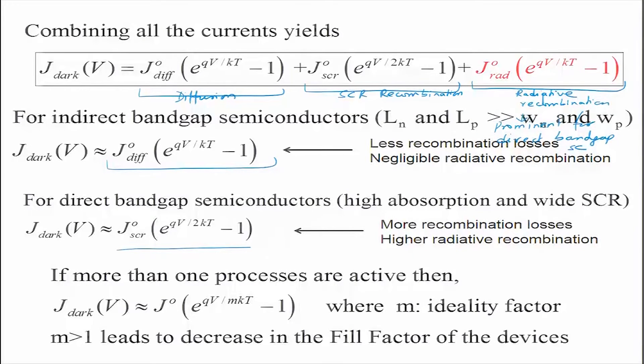However, we introduced space charge region current, which is finite in practical diodes. As a result of recombination within the space charge region as well as radiative recombination in the semiconductors, we have recombination current from the space charge region, and this gives rise to non-ideality in the devices. The dark current is equal to the diffusion current plus the space charge recombination-generated current and radiative recombination, and these factors are dominant in practical devices.